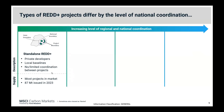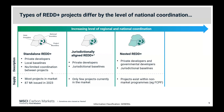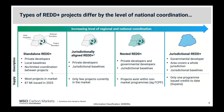Not every REDD+ project is the same. There's an important distinction based on level of national coordination. On one end of the spectrum are standalone REDD+ projects — the most common in the market — with private developers and local baselines and no coordination between projects. Then there are jurisdictionally aligned REDD+ projects using jurisdictional baselines, nested REDD where local projects sit within jurisdictional programs run by governmental developers, and at the other end, J-REDD jurisdictional programs covering whole jurisdictions or even whole nations. Today we'll focus on the left side of the spectrum.